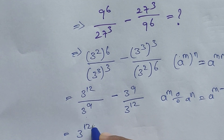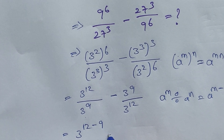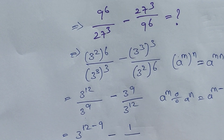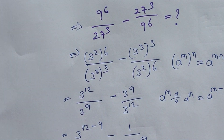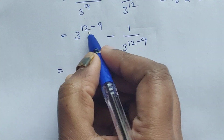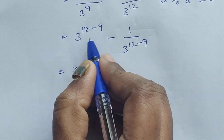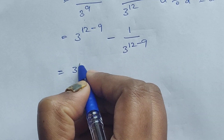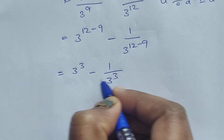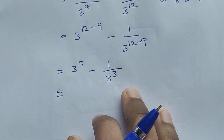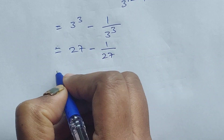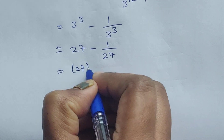So we get 3^(12−9) minus 1 divided by 3^(12−9). That is 3^3 minus 1 over 3^3, which is 27 minus 1 over 27.